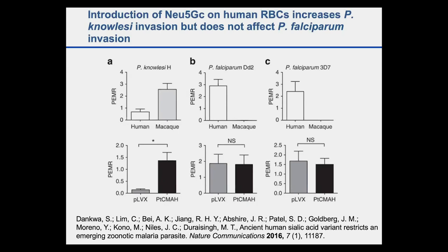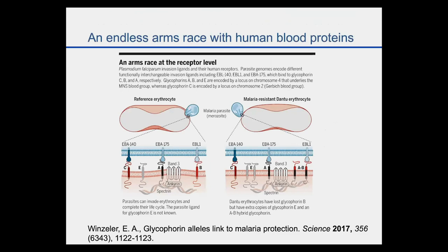This provides circumstantial evidence that the loss of CMAH at one point in human evolutionary history potentially allowed humans to avoid infection by parasites similar to the monkey parasites that currently infect macaques. This is just one story, however, and there is an endless list of different hemoglobinopathies that may provide protection against malaria.